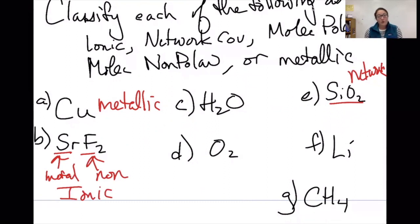For C, water. Both of these are nonmetals, which means I'm going to need to draw the Lewis structure. If you need to review Lewis structures, go back to those videos. Now that I've drawn the Lewis structure and I see that there are lone pairs on the central atom, I know that this is molecular polar. Those lone pairs make it polar.